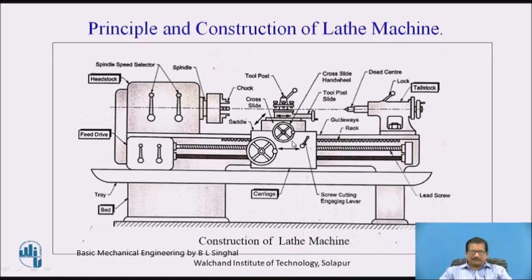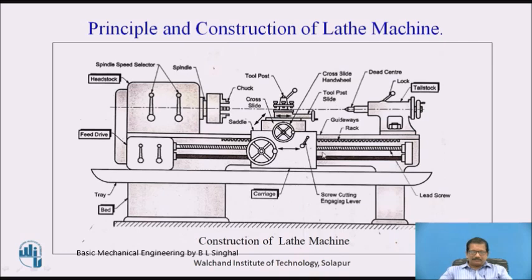This is called the carriage wheel, this is called the cross slide wheel, and this is called the compound slide wheel. This is the screw cutting handle or screw cutting engaging lever, which engages the half nut with the lead screw. For manual movement of the carriage, we rotate the carriage wheel, which rotates the gear behind it; that gear meshes with the rack and pinion mounted on the bedway below, and the carriage moves parallel to the axis of the lathe.